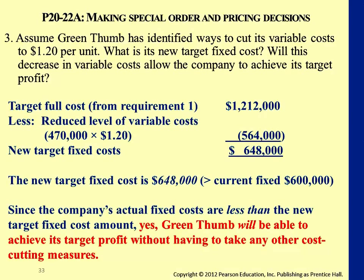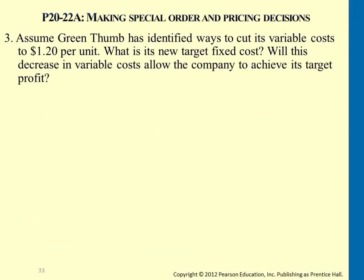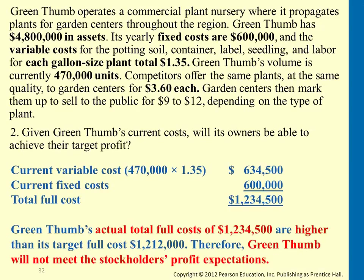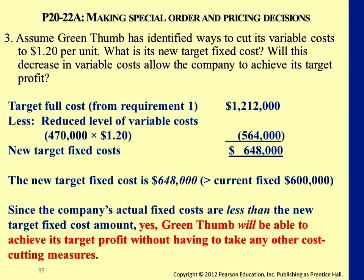You can also calculate whether the lower variable cost meets desired profit by computing overall operating income. This is one way — calculate operating income and compare against the target income. Either way gives the same conclusion. If the new target fixed cost is actually higher than the current fixed cost, then you know that by reducing variable cost you're able to meet the target profit goal. You can compare fixed costs or simply compare operating income against target income.